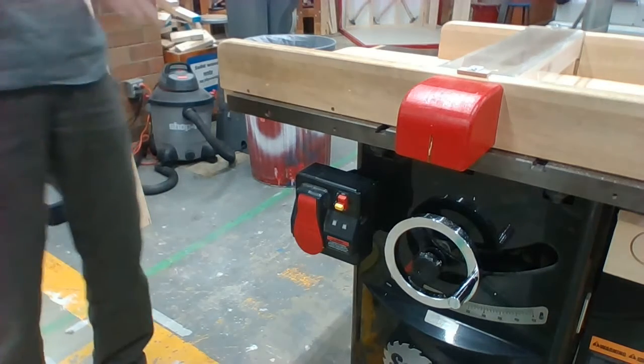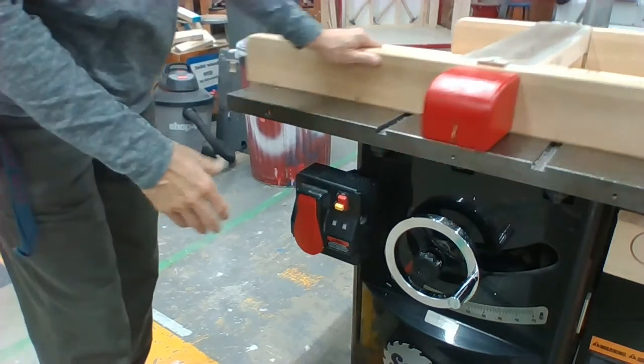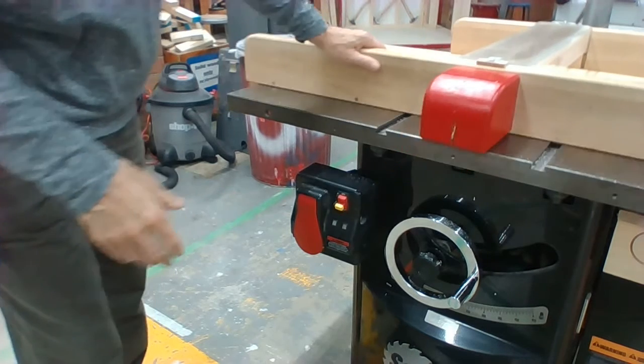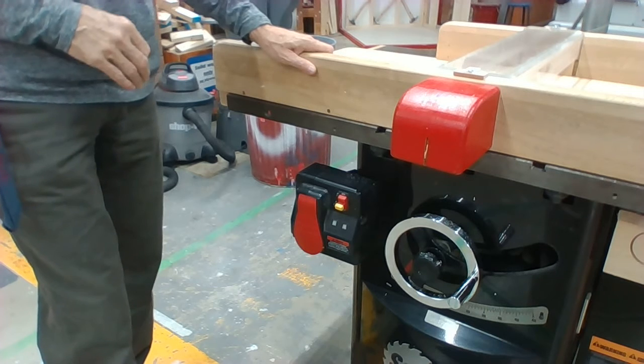All right, when you first come up to the table saw, this is the front of it. The sled slides back and forth, which we're going to be using later on, but right now just to show the operation and how to turn it on.